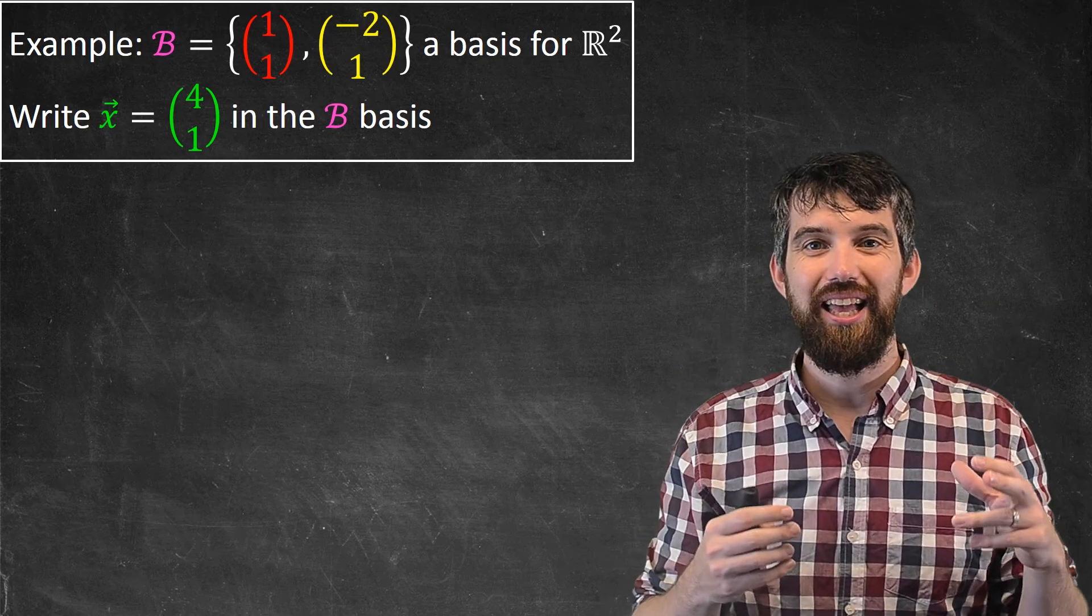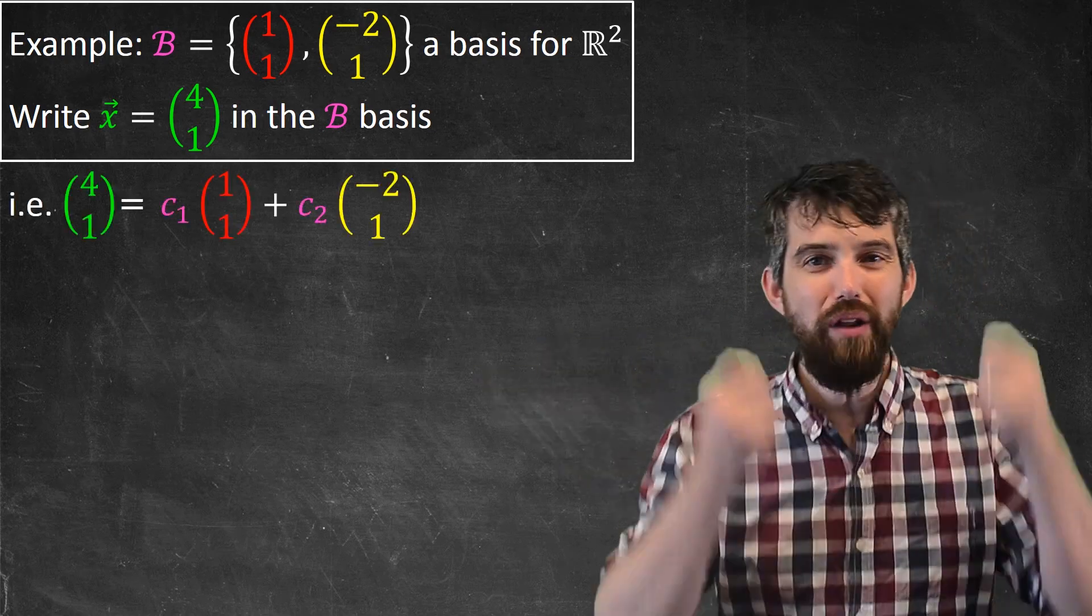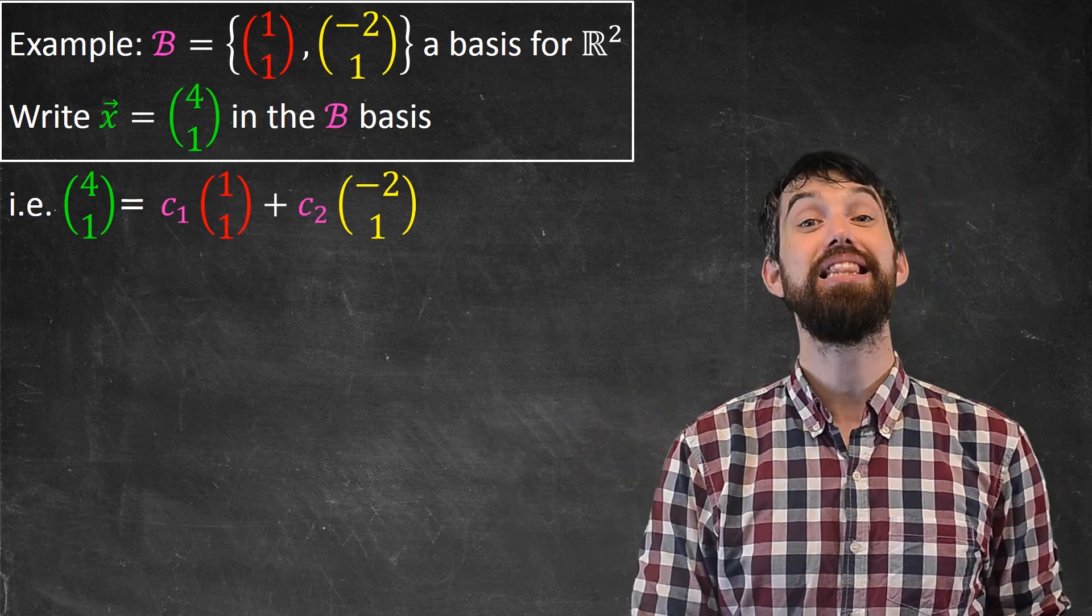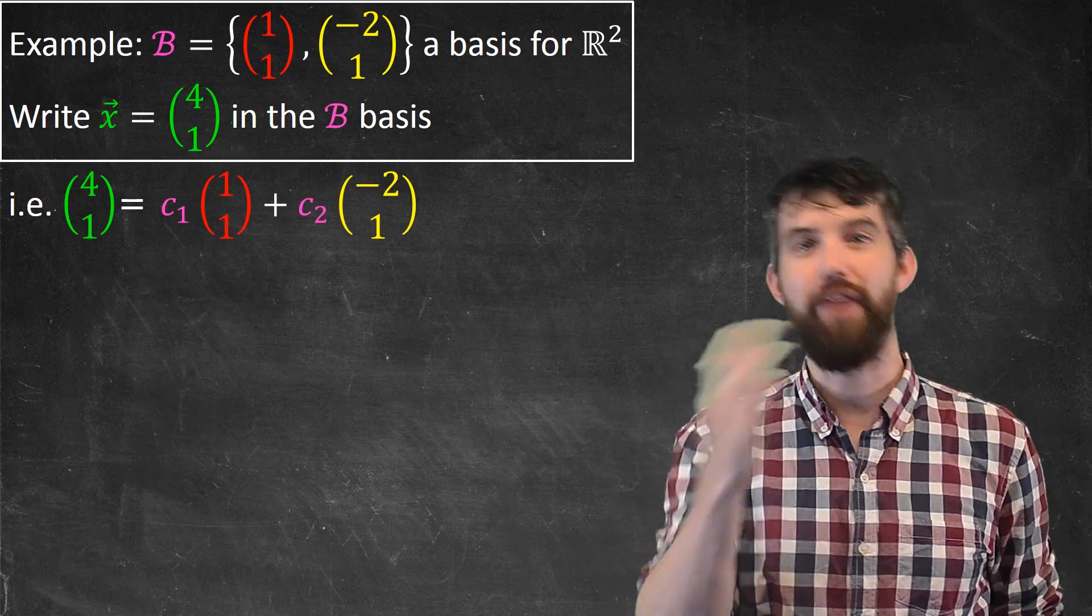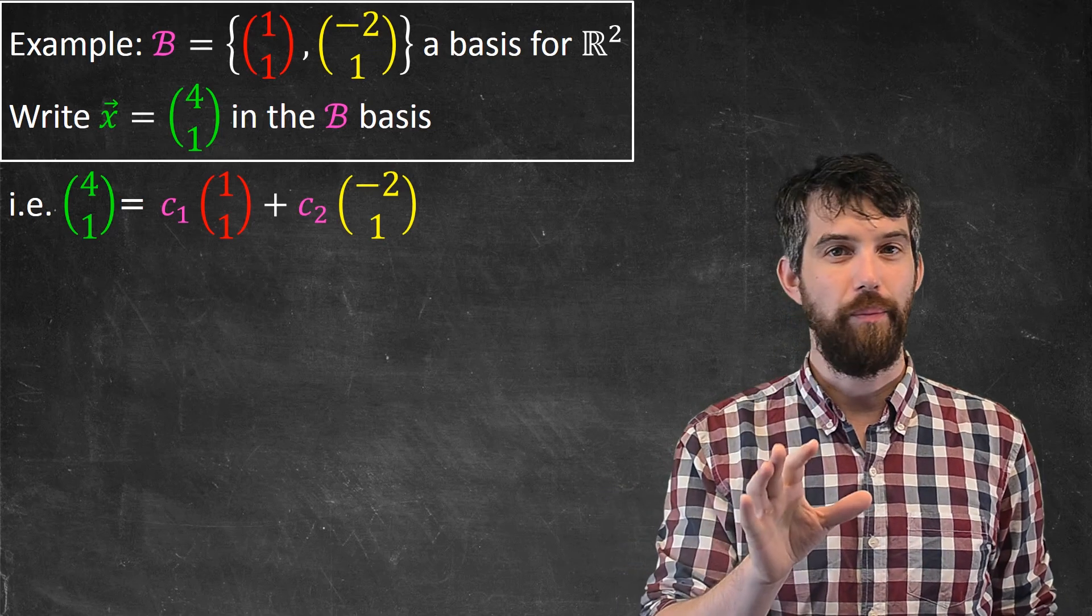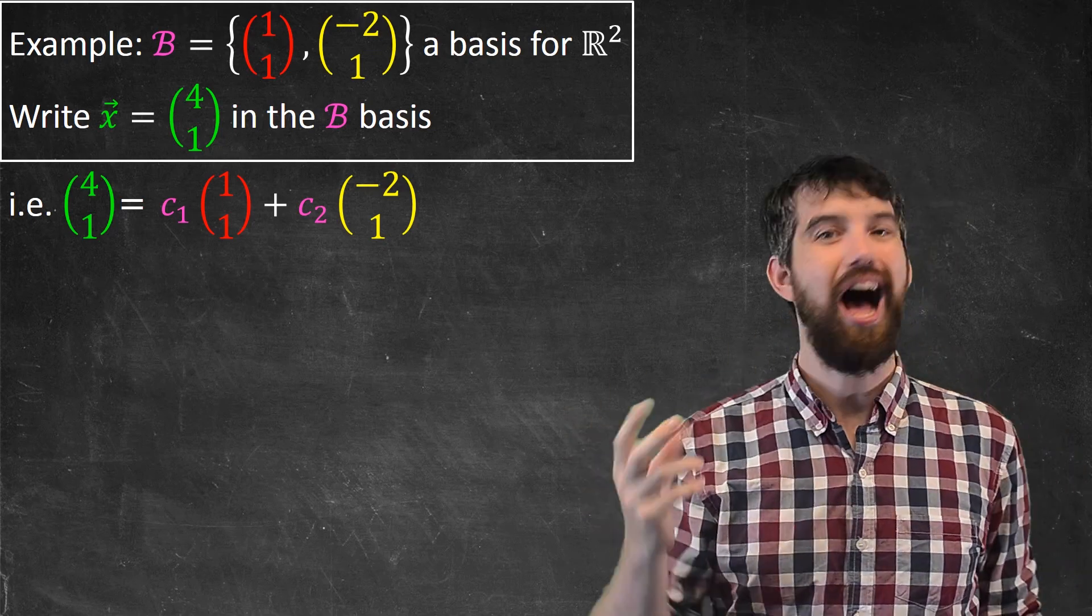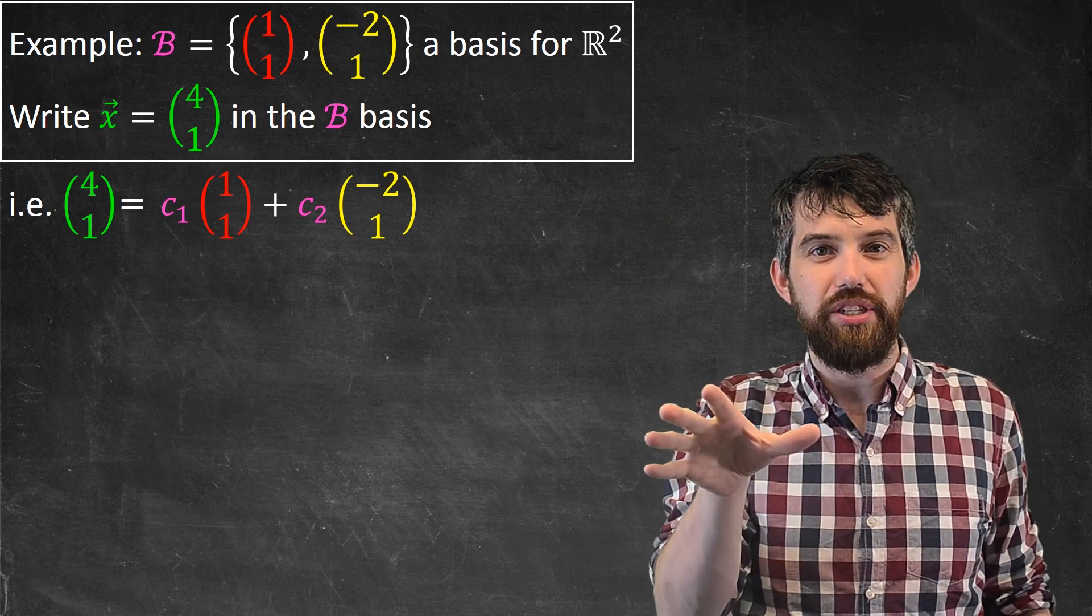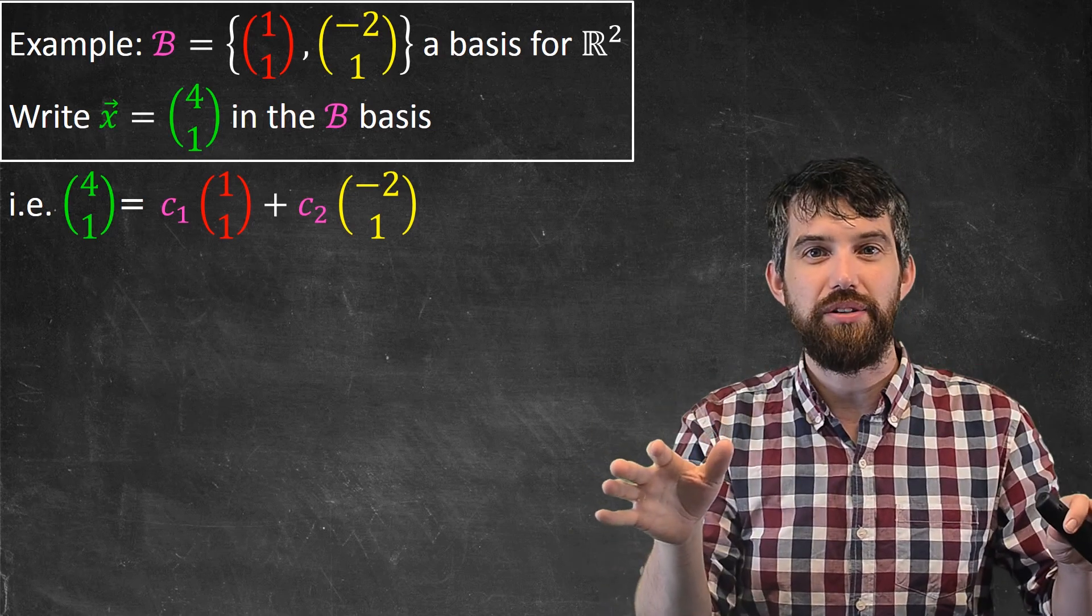That is, if I take my x, what are the coefficients, the c_1 and the c_2, so that it can be written as a linear combination of the b_1 and the b_2? Now, whenever you see a linear combination, I want to have a little bit of an alarm bell go off in your mind, because linear combinations and multiplying by a matrix are the same thing.